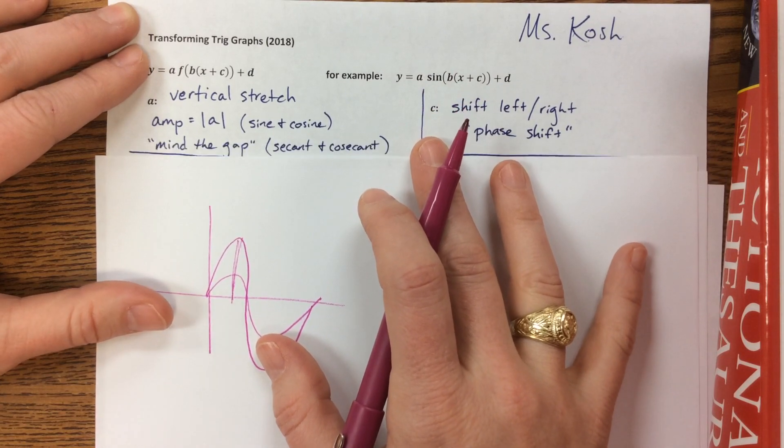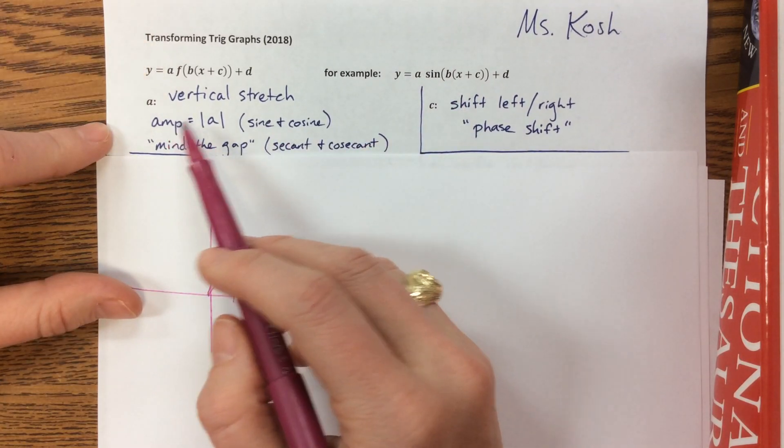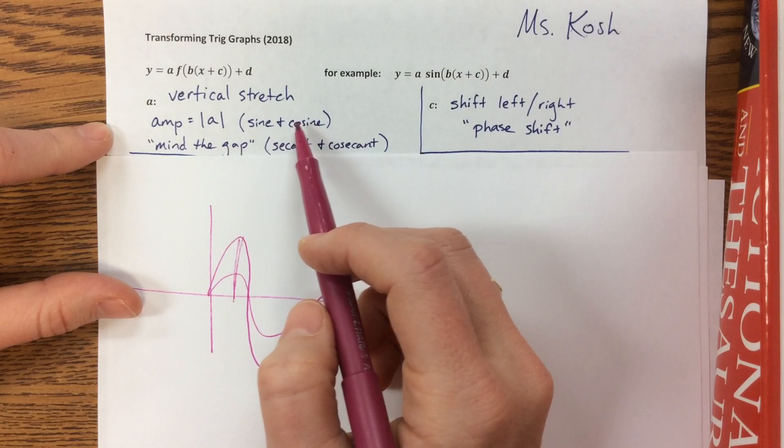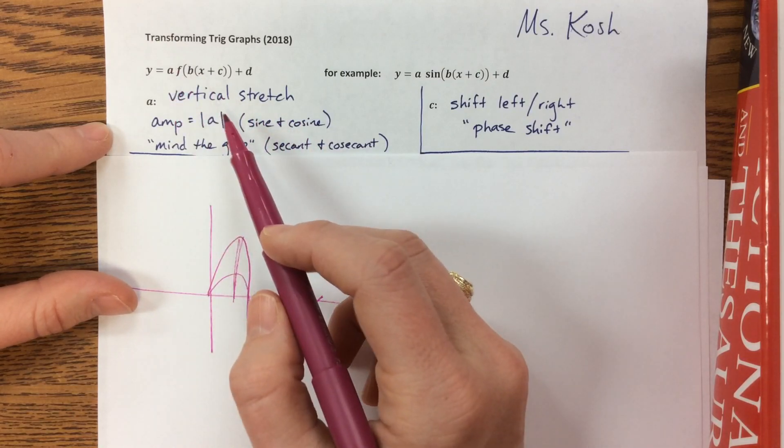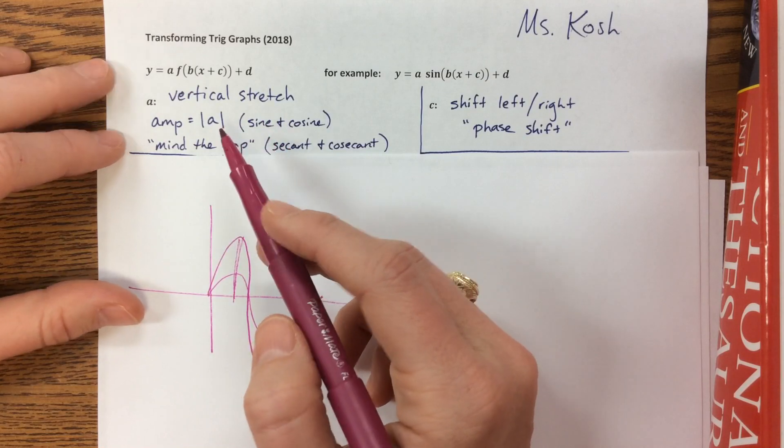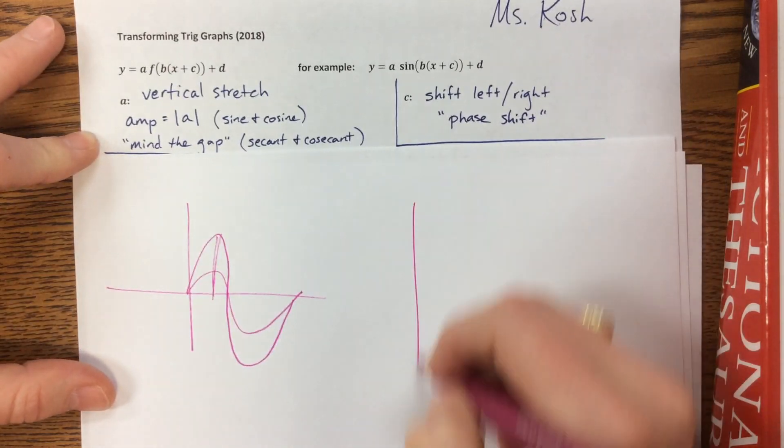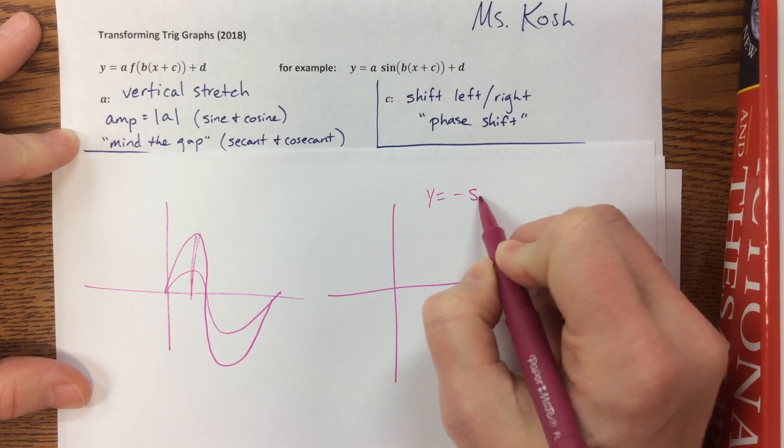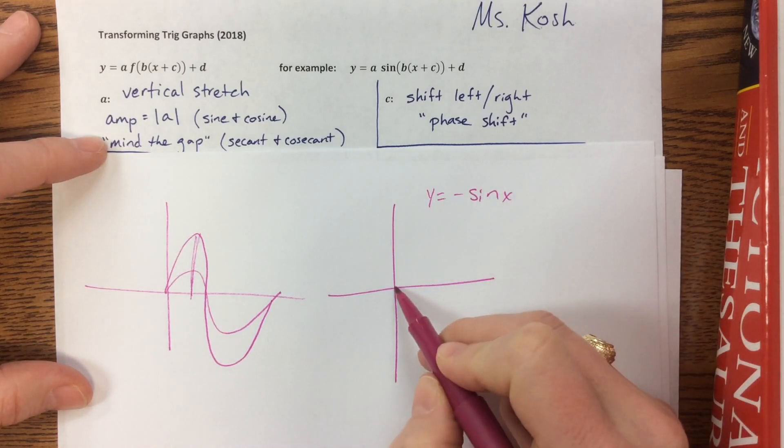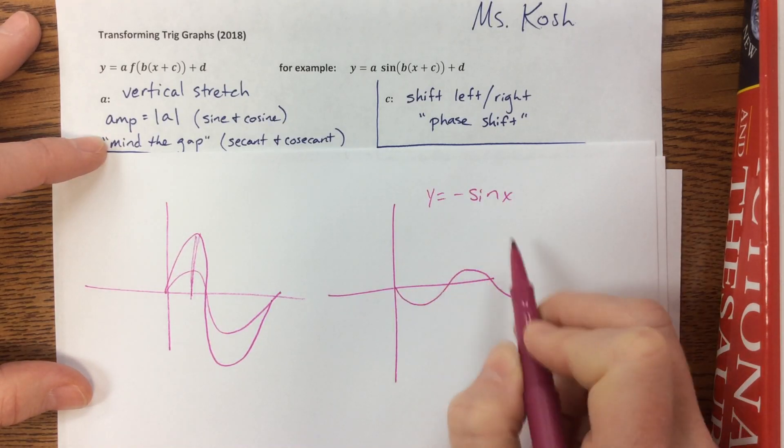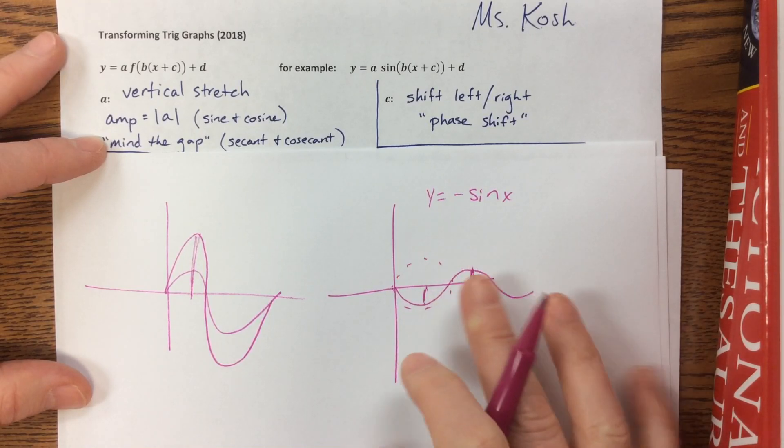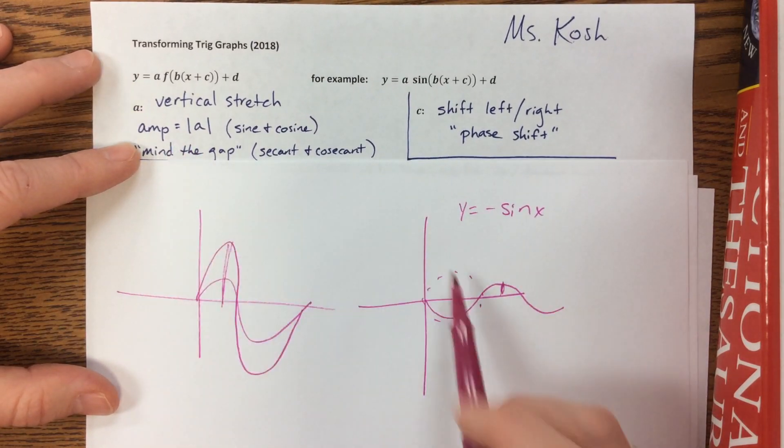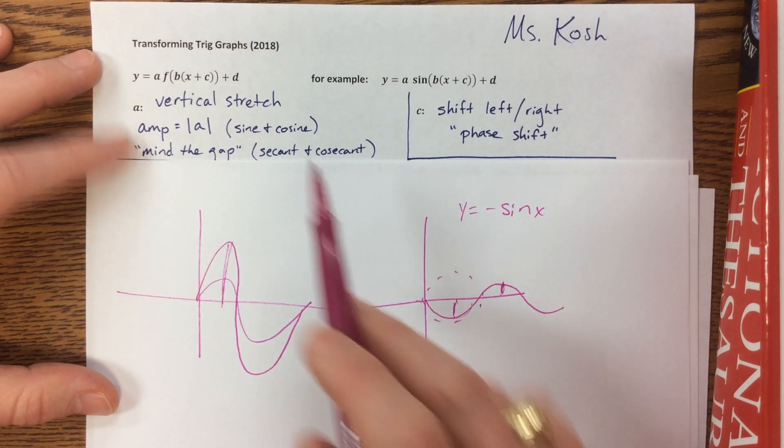So when we talk about the amplitude of sine and cosine, since those are the only two with amplitude, if it's the absolute value of a, if I make it negative though, so like say I had y equals negative sine of x, you'll remember that that reflects it. So whatever my parent function, if this is one, here's one. But instead of starting and going up first, now I start and go down. The amplitude though, even when I'm going down first, is a positive one.